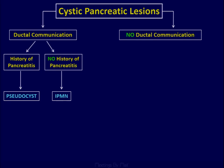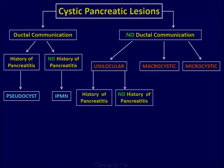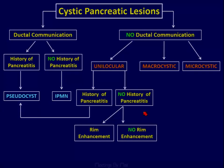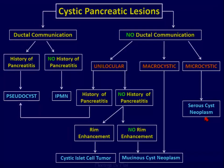If there is no ductal communication, we look for other morphological features, whether it's a unilocular cyst. If there is history of pancreatitis, it's a pseudocyst. If no history of pancreatitis, we look for RIM enhancement. If there is RIM enhancement, you're dealing with a cystic islet cell tumor. If there is no RIM enhancement, it's a mucinous cystic neoplasm — macrocystic — or if microcystic, a serocystic neoplasm. In a young female with cystic and solid component, think of SPEN.